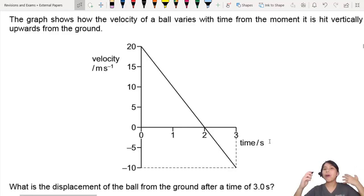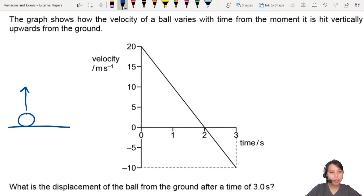Here you have a velocity-time graph for a ball the moment it is hit vertically upwards from the ground. So a ball is going up, right? You can draw a little ball here going upwards from the ground. Maybe this is the ground, sure.